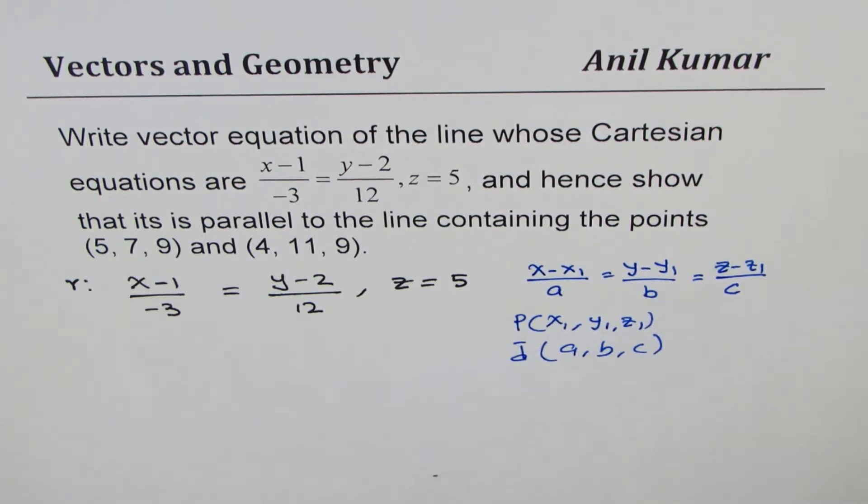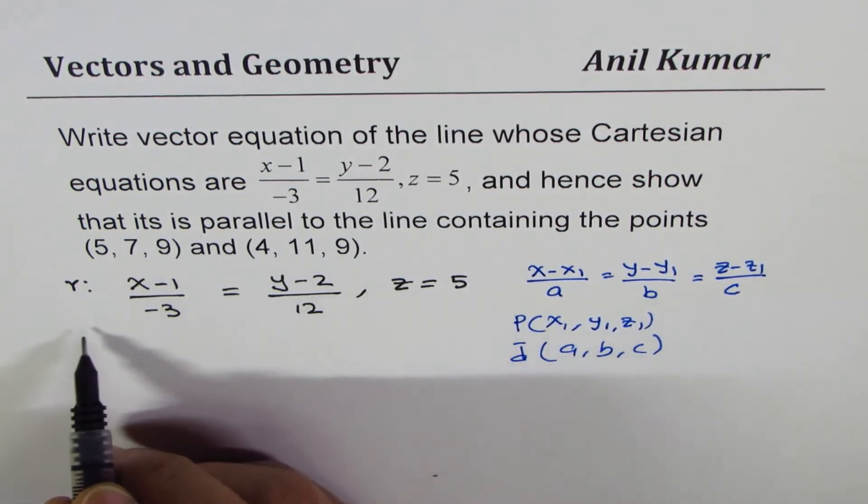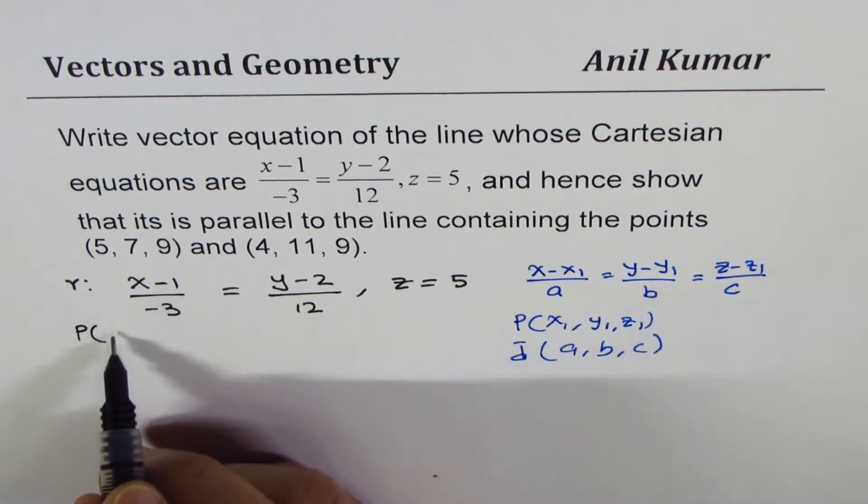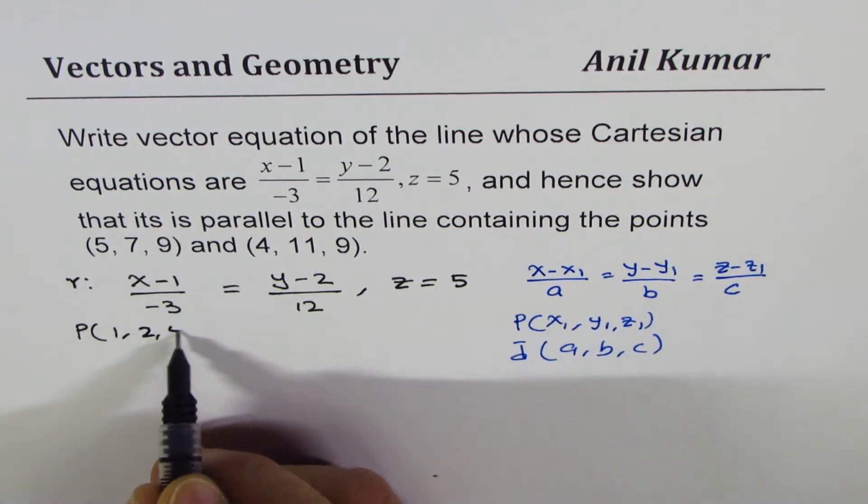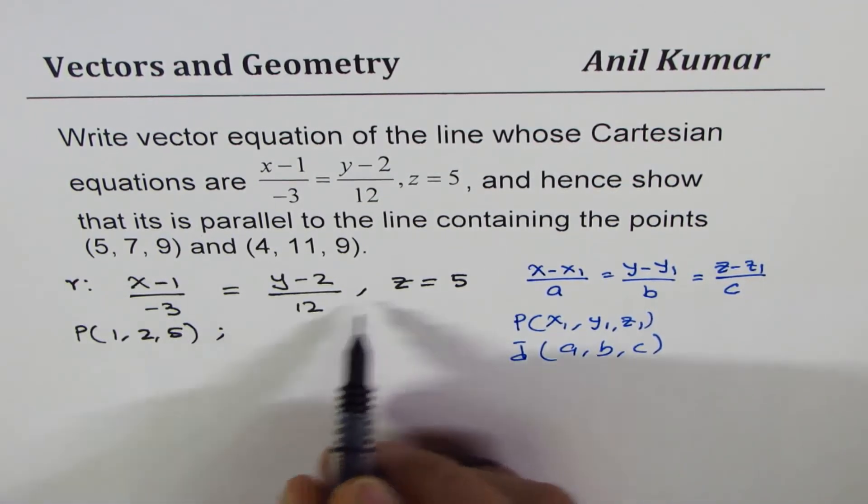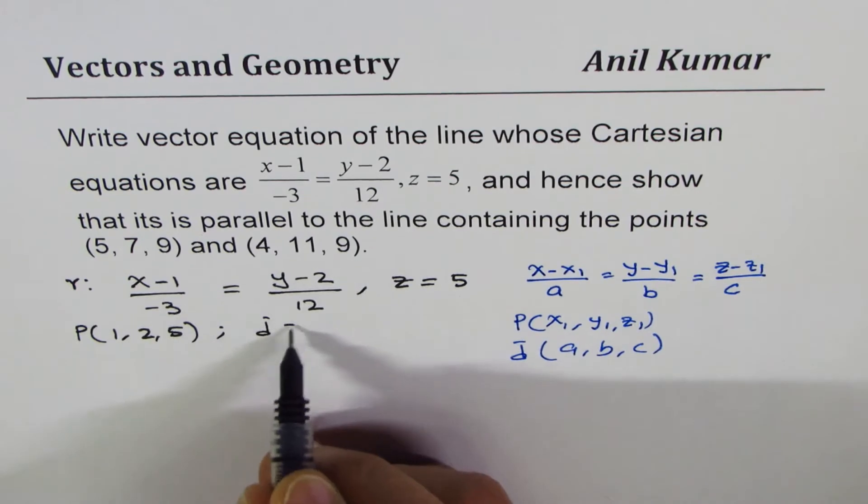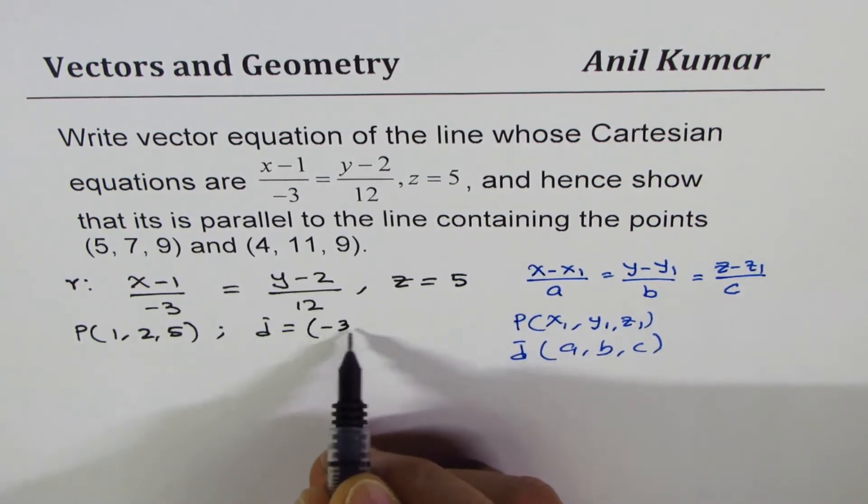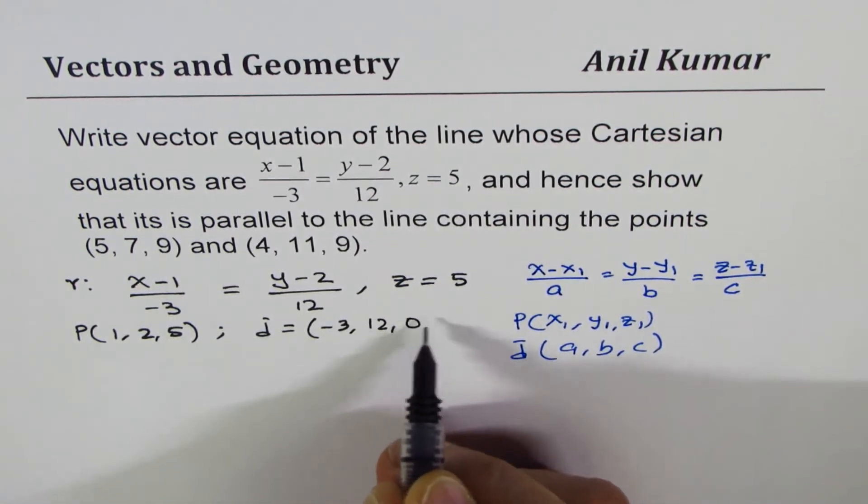So for the given situation, what we can say is we have a point P, which is (1, 2, 5). So that's the coordinate of a point. And what we also have is the direction, and the direction here is (-3, 12, 0).